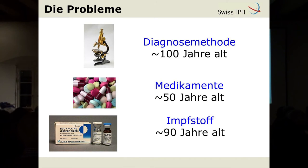Es ist eine komplizierte Krankheit einerseits. Auf der anderen Seite sind die Waffen oder die Methoden, die wir zur Verfügung haben, alle eigentlich extrem veraltet. Ein Beispiel ist die Diagnosemethode, die Mikroskopie. Die ist mehr als 100 Jahre alt – es ist eigentlich die gleiche Methode, die damals Robert Koch schon verwendet hatte, um diese Bakterien zum ersten Mal zu entdecken. Heutzutage wird in den meisten Ländern nach wie vor mit einem Mikroskop versucht, diese Bakterien im Sputum der TB-Patienten zu finden. Leider klappt das eben nicht immer – bis zu 50% der Fälle werden dann die Patienten verfehlt.